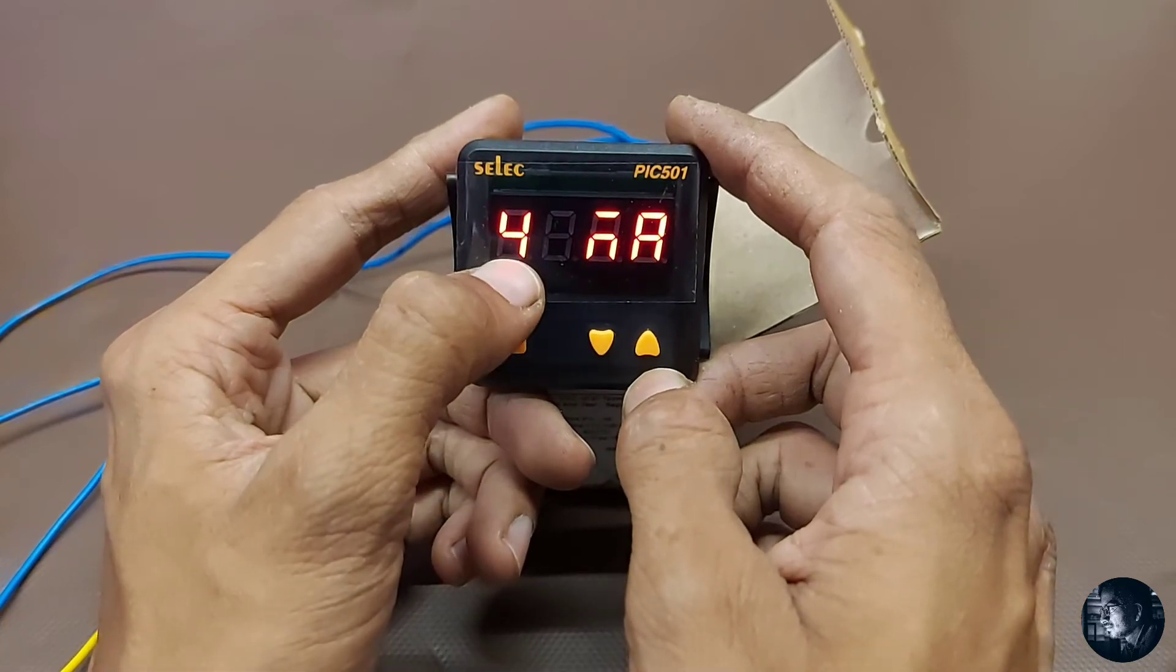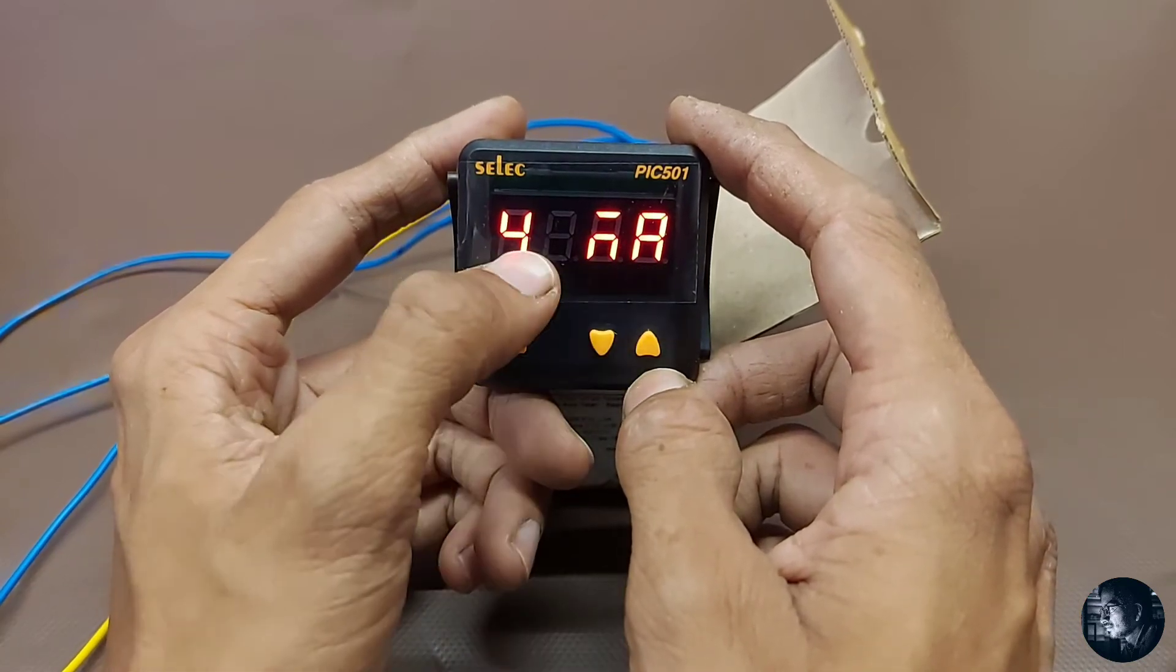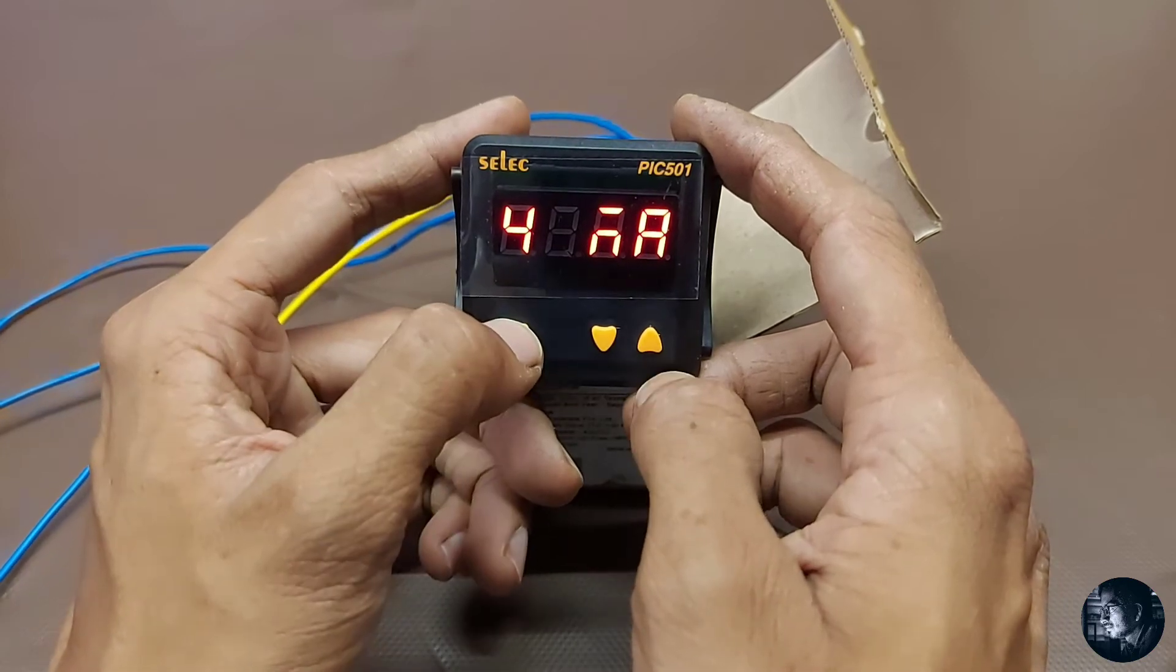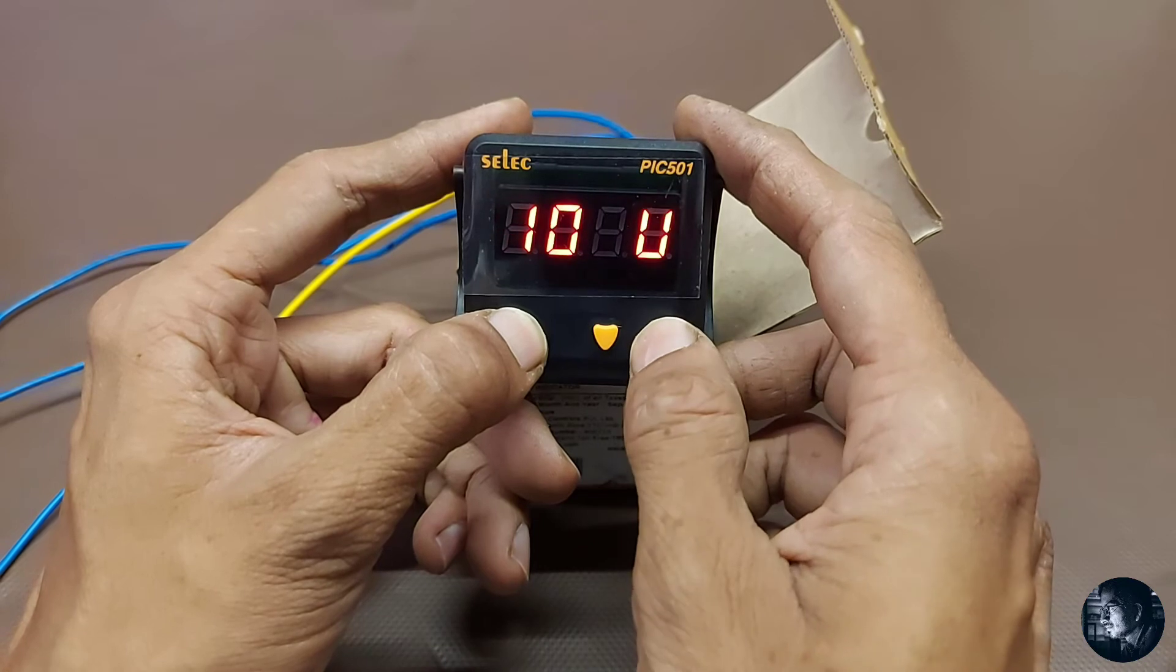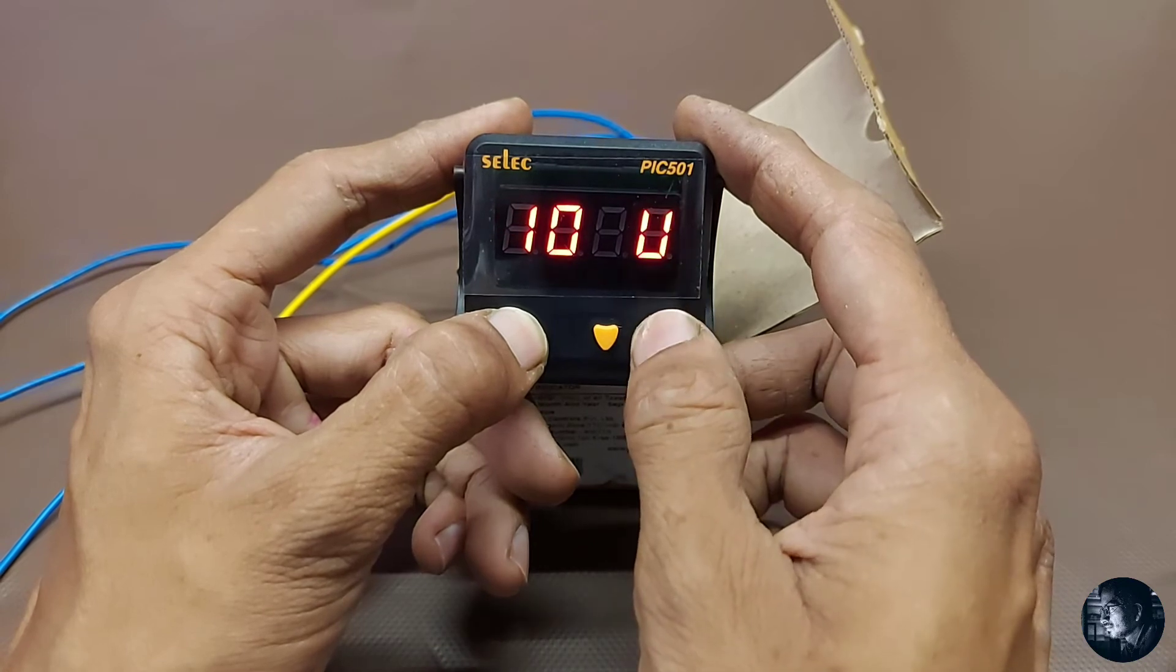Now press and hold the select button to change the value. Options are 10V (0 to 10V) and 0mA (0 to 20mA). We will select 10V.